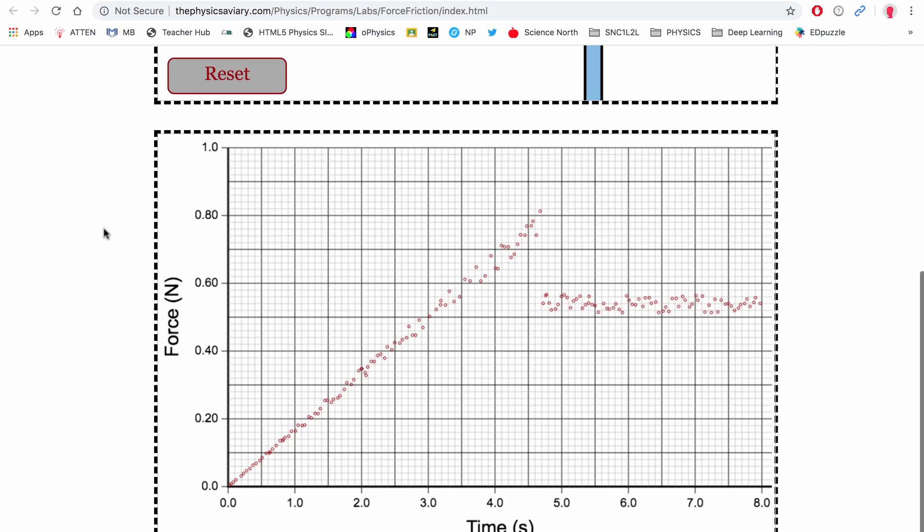Now if we scroll down, it generated a graph. This diagonal line represents the increasing force until we overcome static friction. So the static friction is actually at this peak right here, which we can read off the graph, and it looks like it's around 0.8 newtons. Once the static friction is overcome, the amount of force required to drag the block drops off, and this horizontal line represents the kinetic friction, which looks like it's in the neighborhood of about 0.5, maybe 0.55.